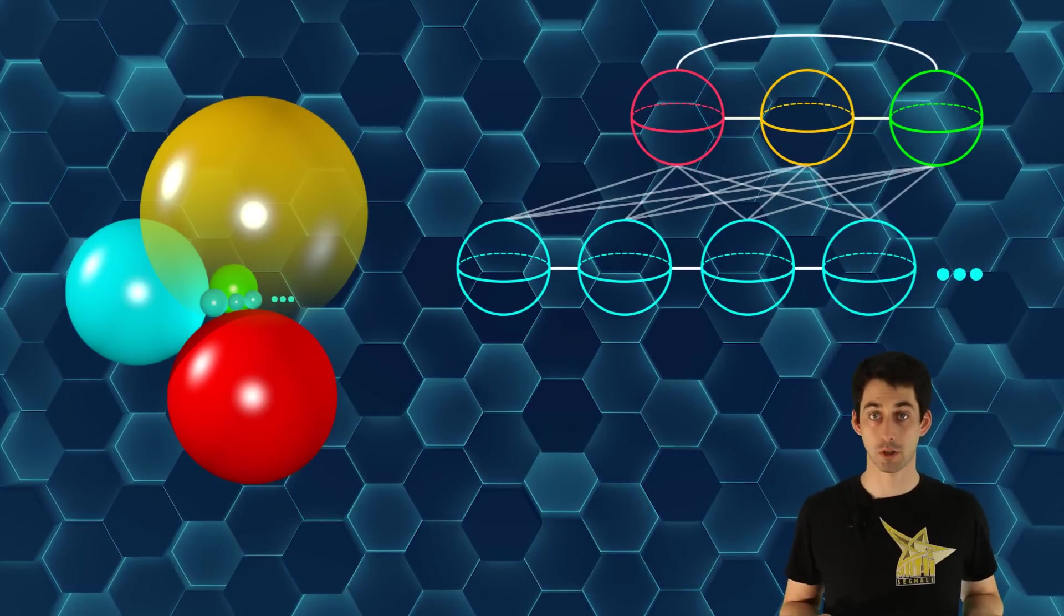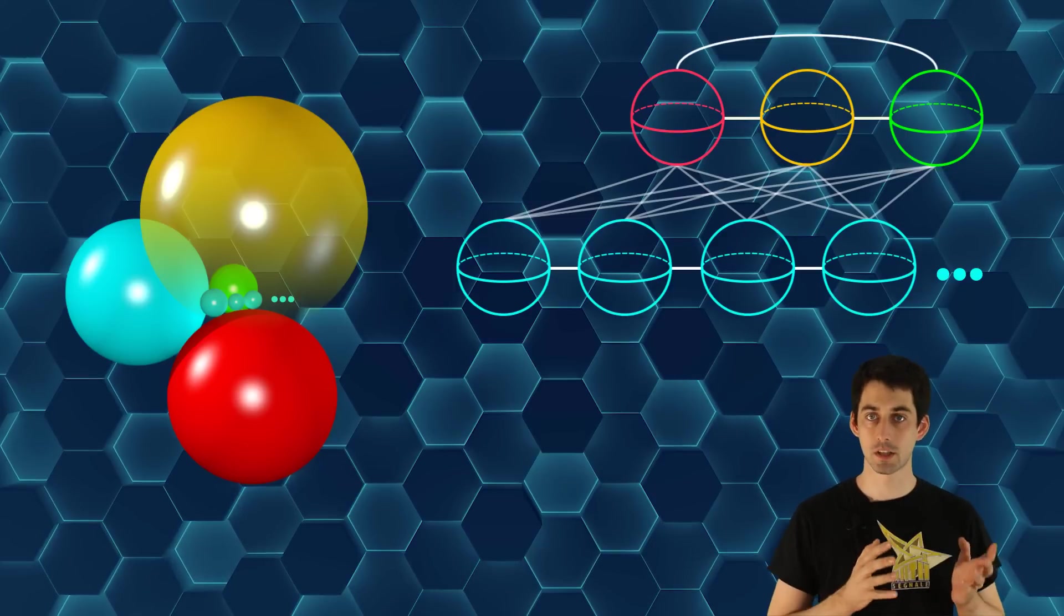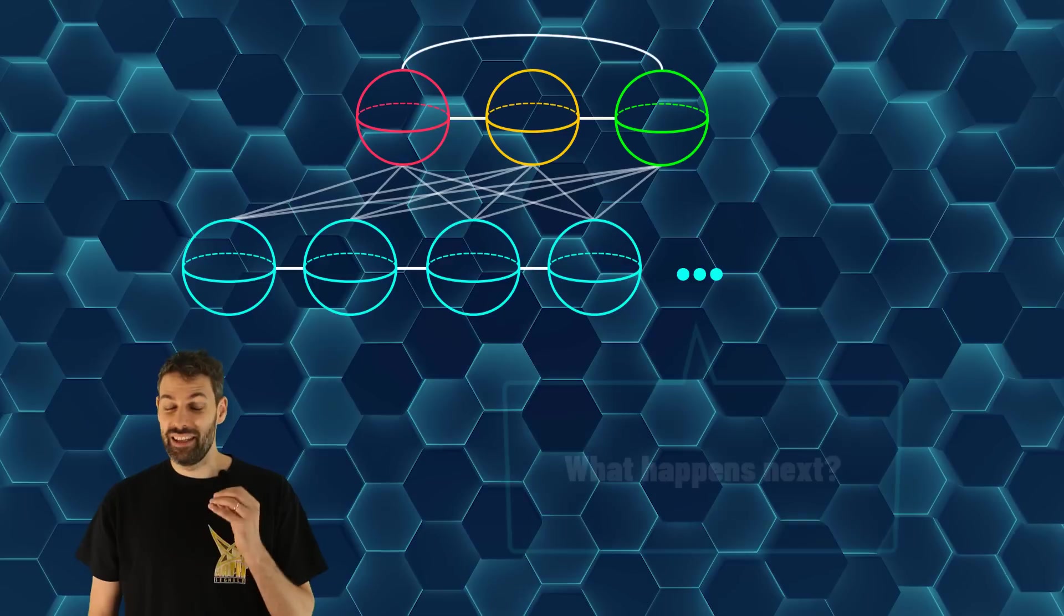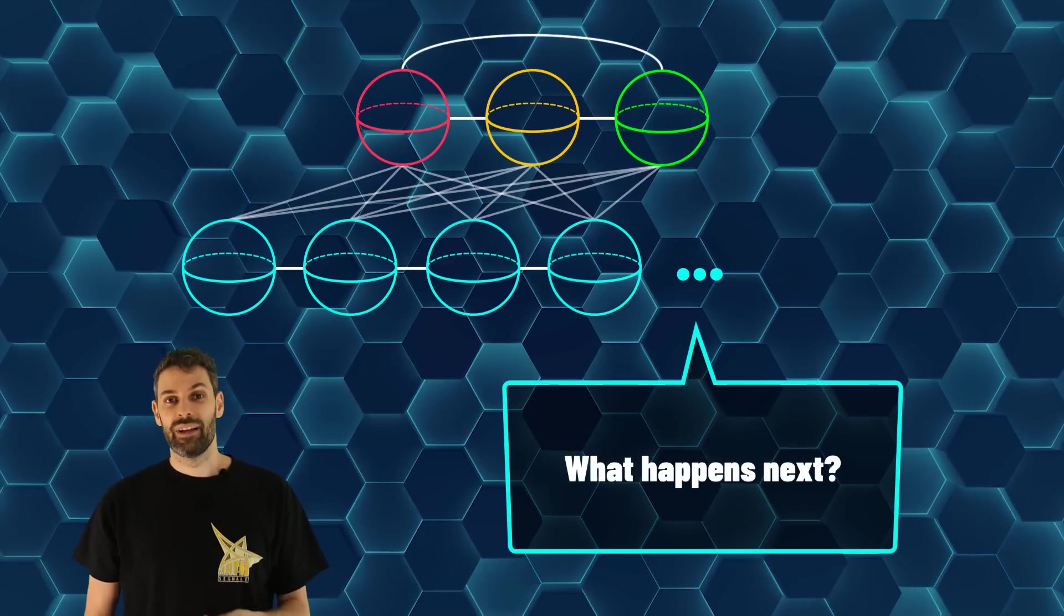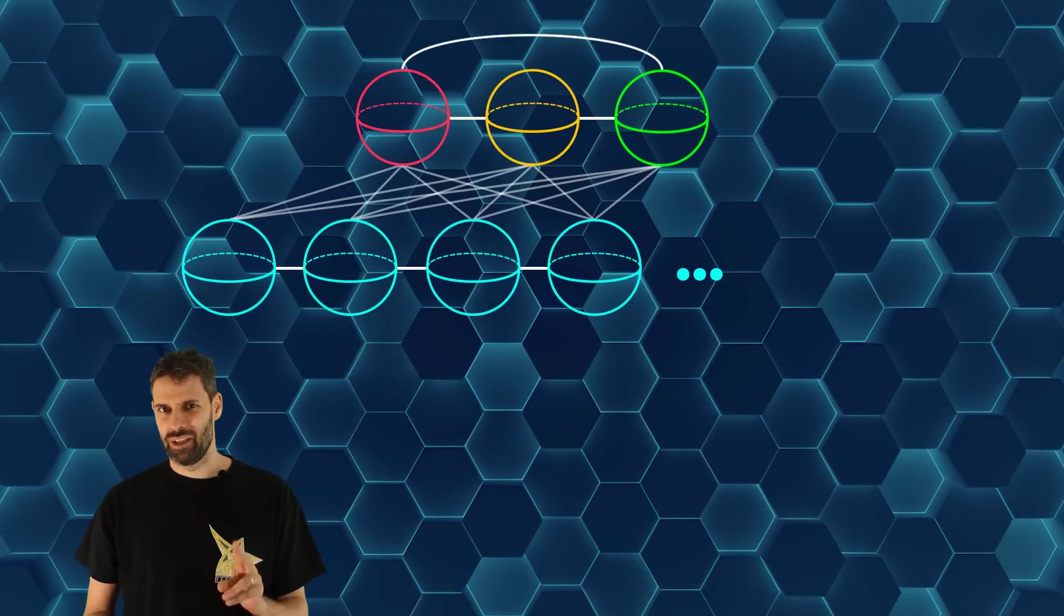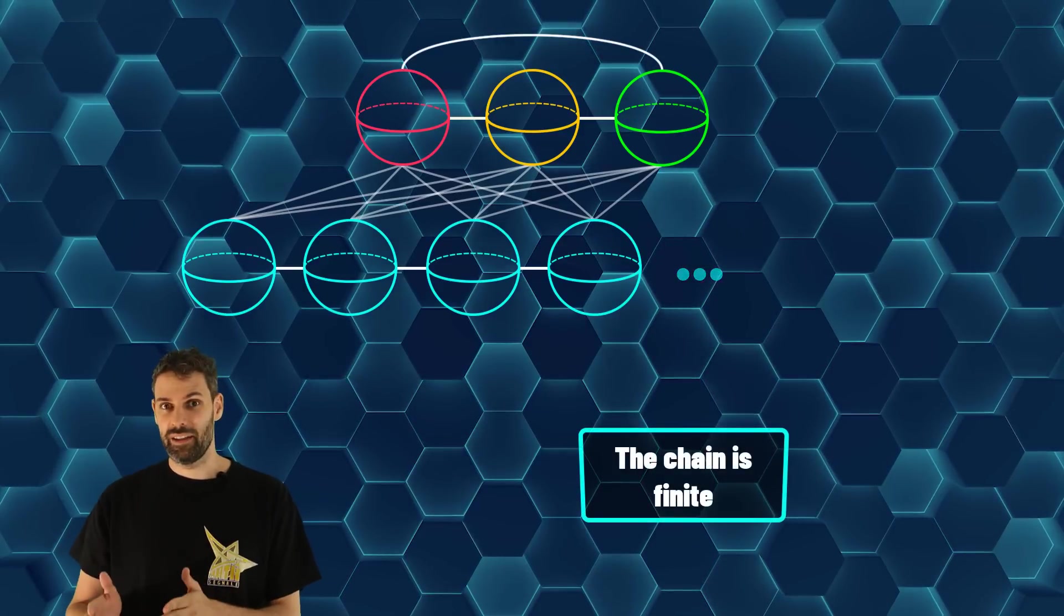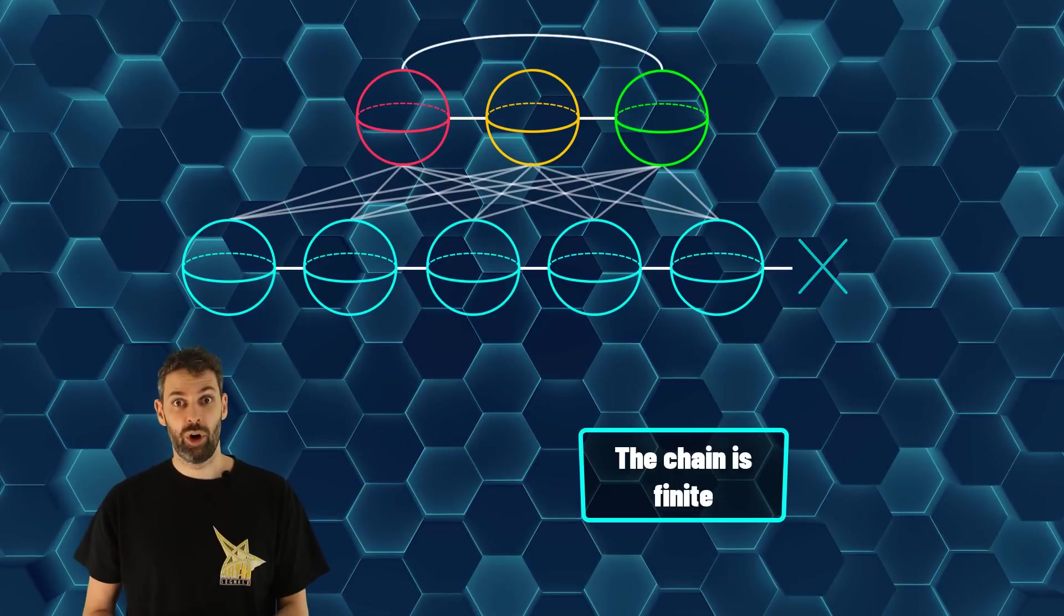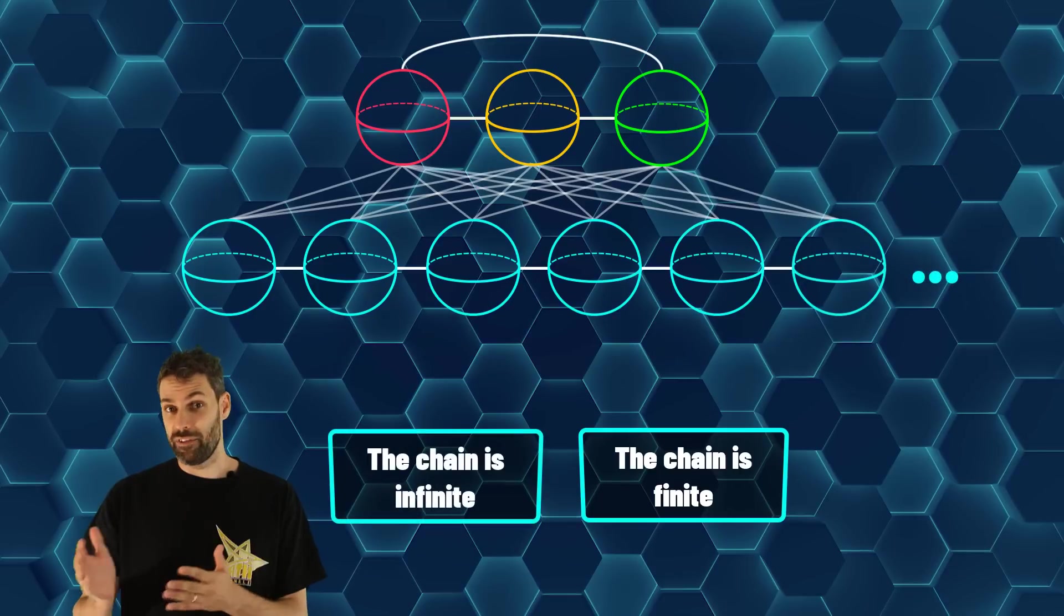Wait, how do I know it is possible? How do I know these spheres exist? You don't. In fact, this is the problem. How can this chain behave? There are two possibilities. The chain is finite, so at a certain point you can't find another blue sphere, or the chain is infinite.